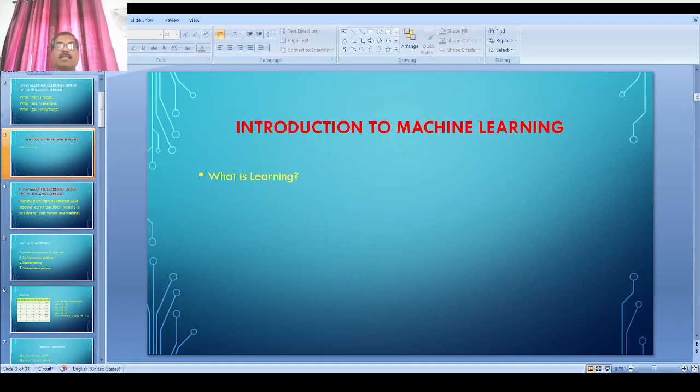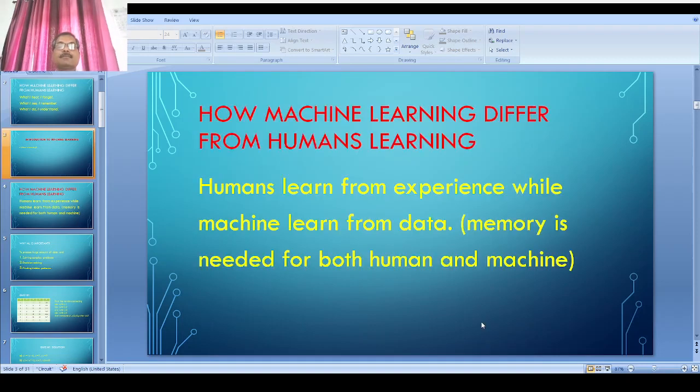How is human learning related to machine learning? Can you guess? Humans learn from experience. We make mistakes, we correct our mistakes. So we learn from experience.